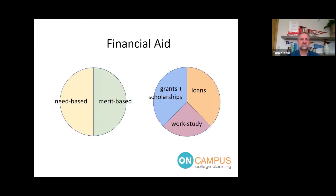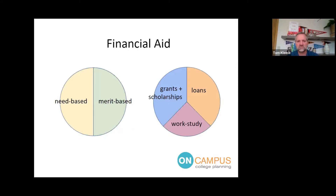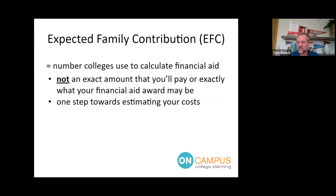Let's do a quick review of financial aid — it comes in all sorts of different flavors: need-based and merit-based. We can also break it into three major types: grants and scholarships, which you don't pay back and can be either need-based or merit-based; loans, which are always need-based and you pay back; and work-study, which is also need-based and is essentially a part-time job.